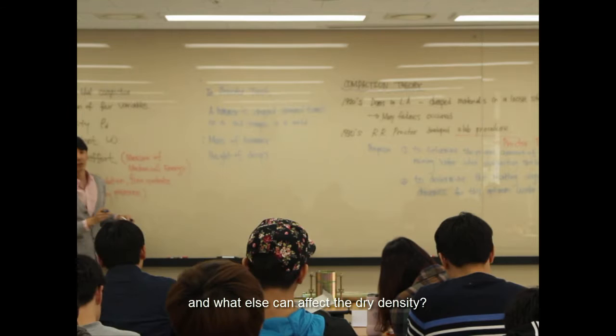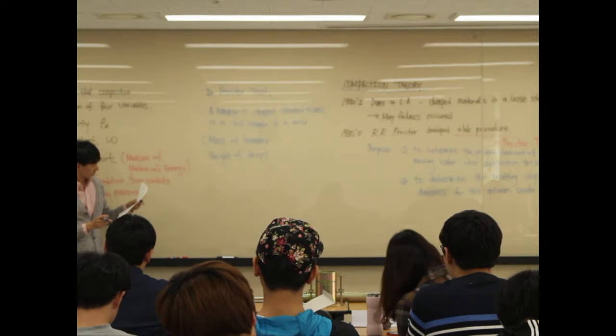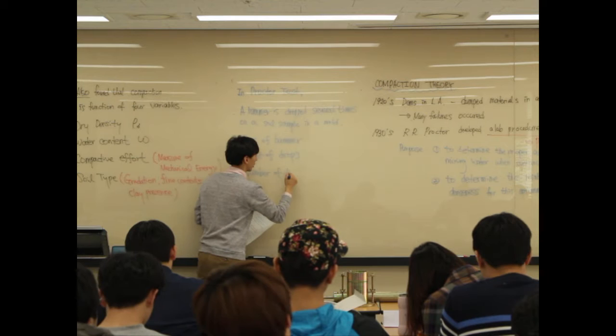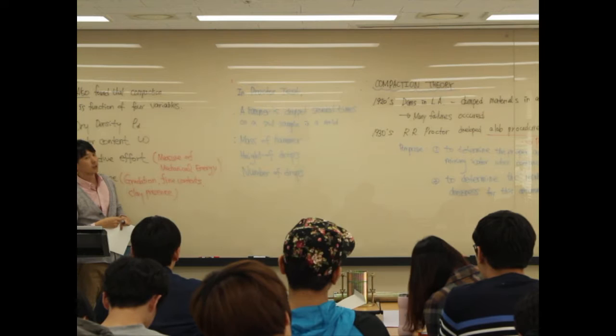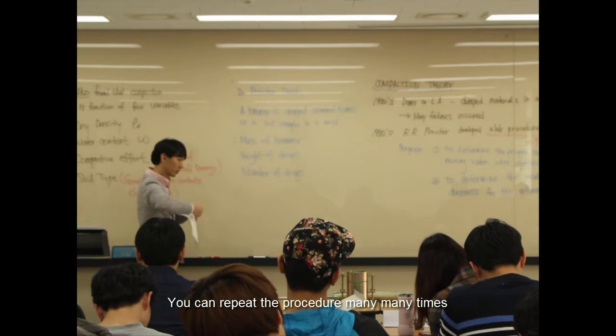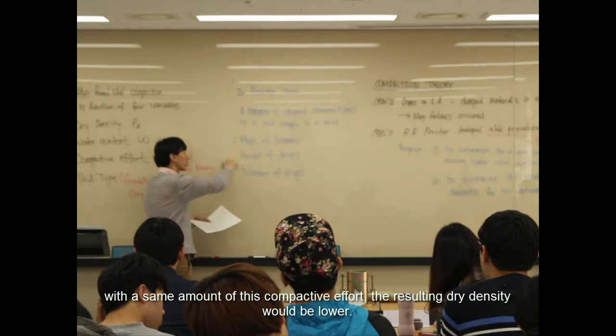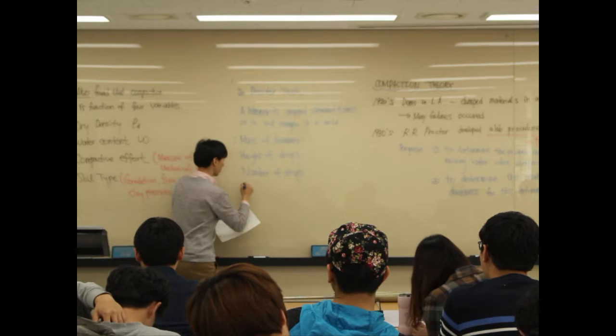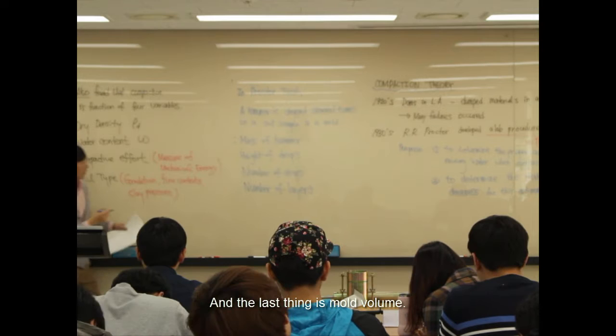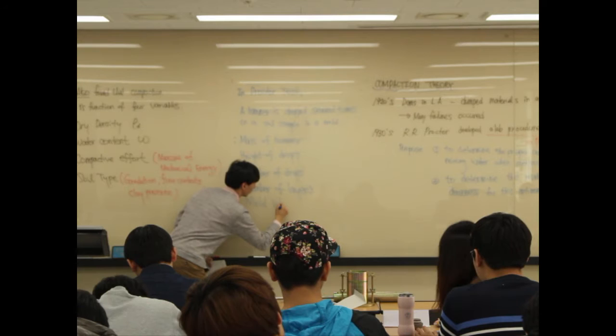What else can affect the dry density? Number of drops - we need to specify the number of drops. And what else? The number of layers. If you do it for a very thin layer, then it will be compacted well. But if you do maybe one or two layers with the same amount of compacted effort, the resulting dry density will be lower. And the last thing is the mold volume.